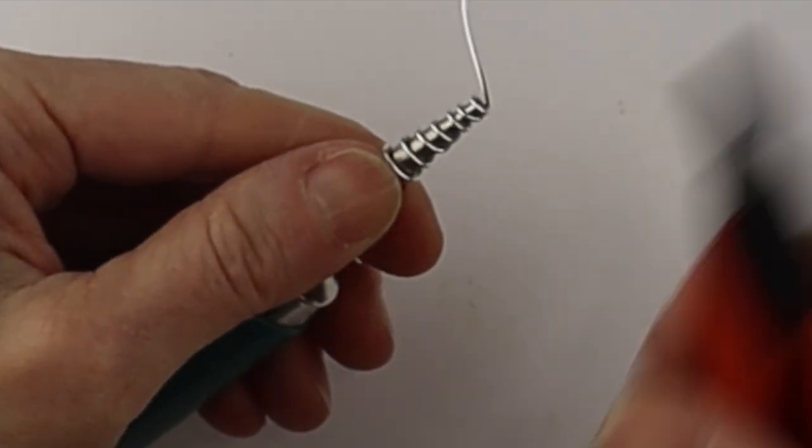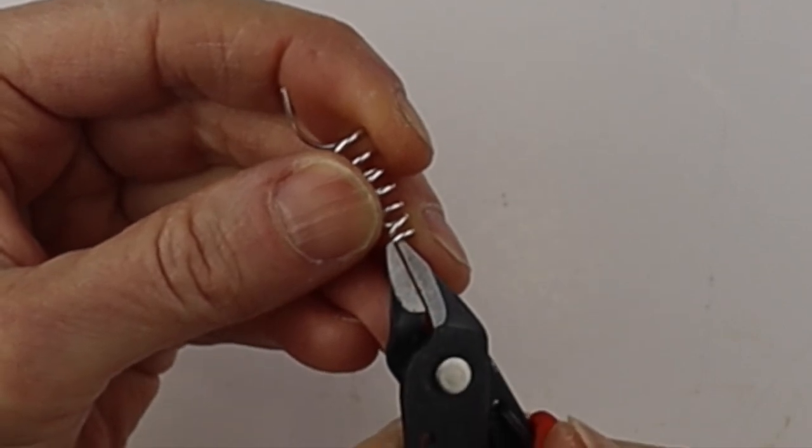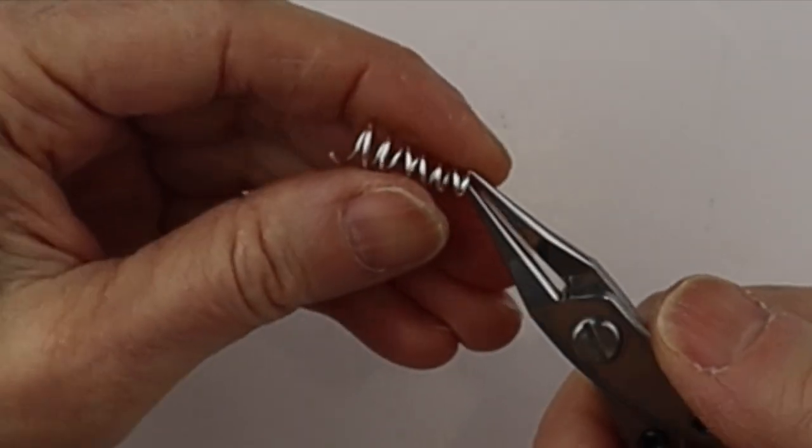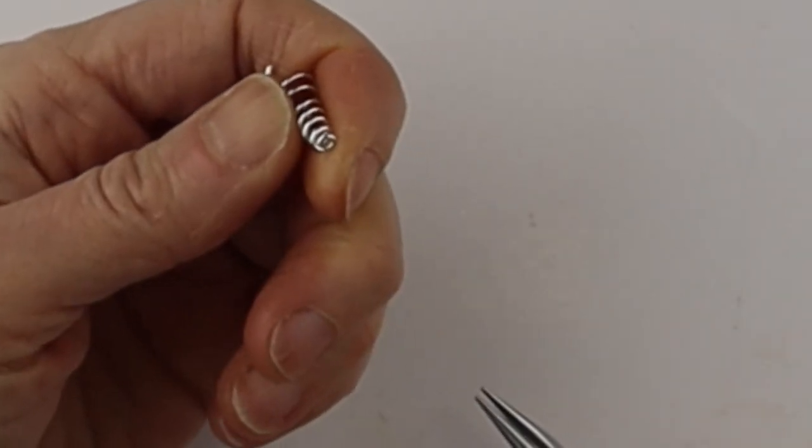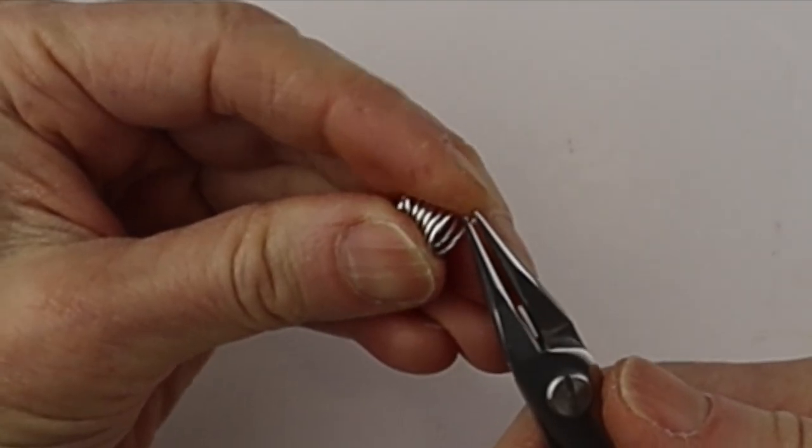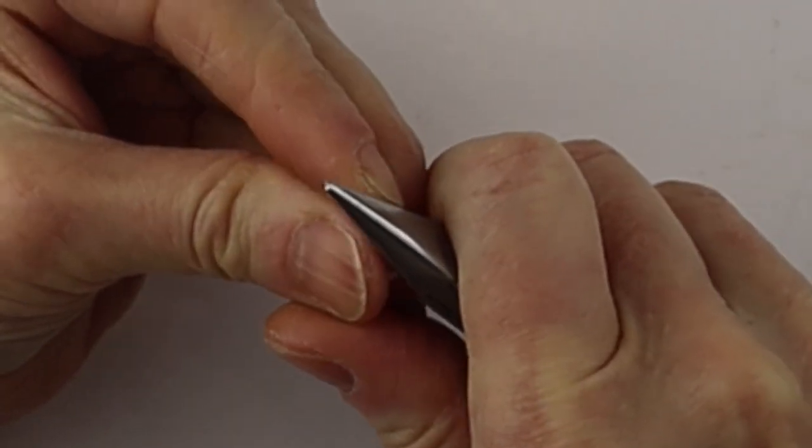Again clip the end to release it from the bit. We'll clip the end of the wire with the flush cutters and clip the other end. Turn the end in so it's not sharp. Push the spring together and bend up the other end inside so it's hidden.